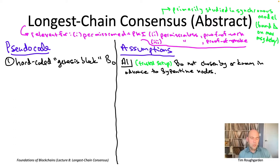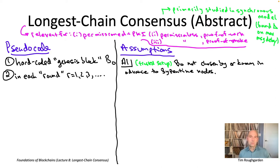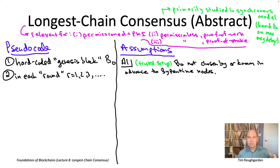The way I'll describe longest chain consensus involves a notion of rounds, and the blockchain grows larger each round. The appropriate interpretation of a round differs across settings. In the permissioned setting, you're familiar with this — nodes take turns as leaders across rounds. In the permissioned, synchronous setting, we think of a global shared clock splitting time into intervals, each corresponding to a round.